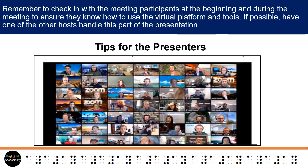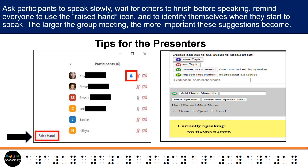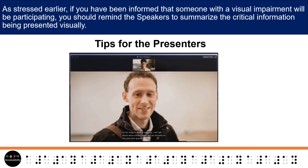Remember to check in with the meeting participants at the beginning and during the meeting to ensure they know how to use the virtual platform and tools. If possible, have one of the other hosts handle this part of the presentation. Ask participants to speak slowly, wait for others to finish before speaking, remind everyone to use the raised hand icon, and to identify themselves when they start to speak. The larger the group meeting, the more important these suggestions become. As stressed earlier, if you have been informed that someone with a visual impairment will be participating, you should remind the speakers to summarize the critical information being presented visually.